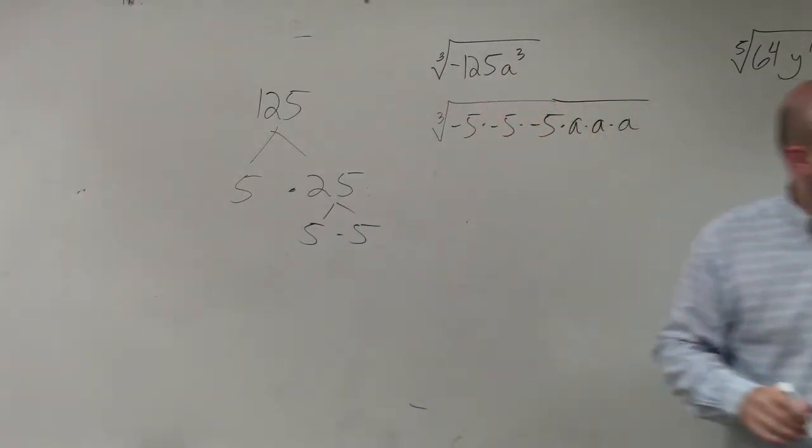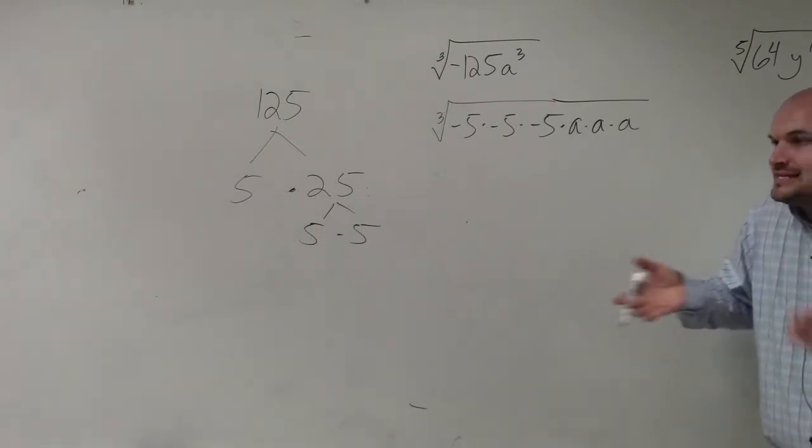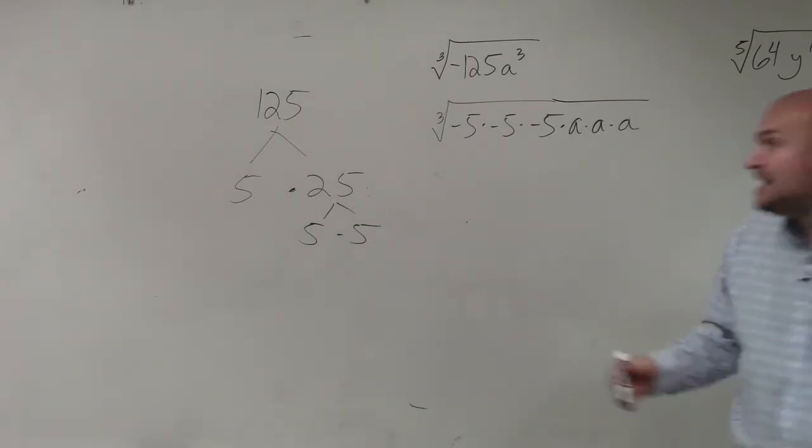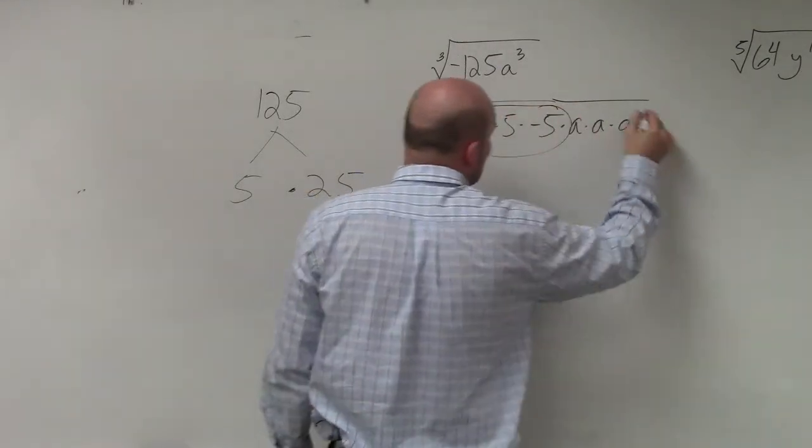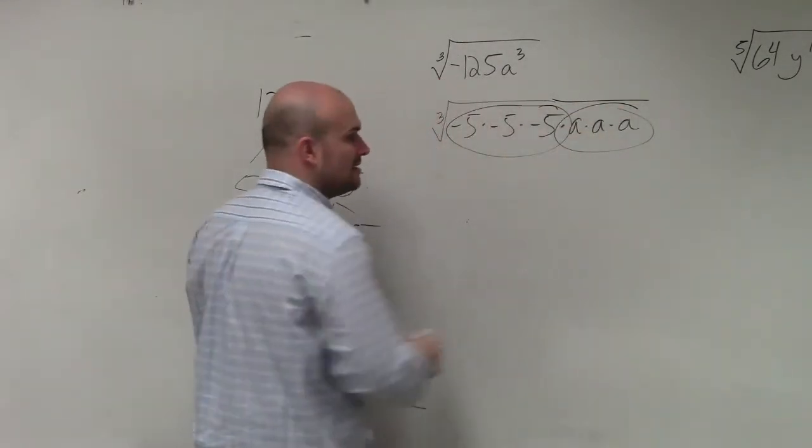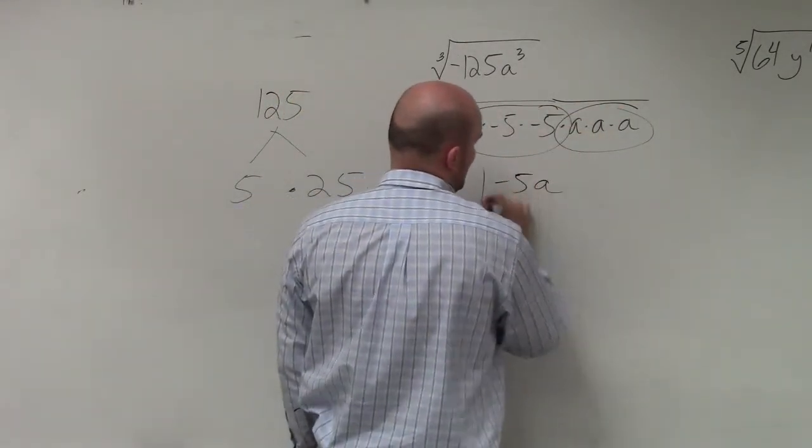So if you guys were to look at this one, again, what is the cube root asking? The cube root is asking what number multiplied by itself three times. We have negative 5 and we have a times a times a. So my answer is negative 5a.